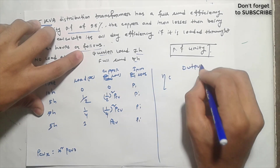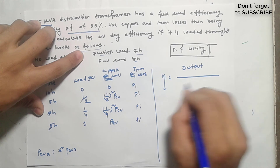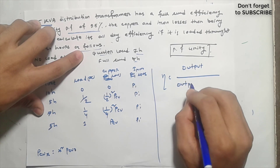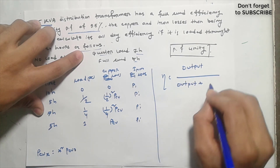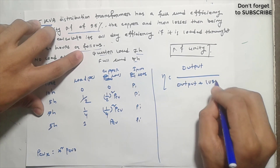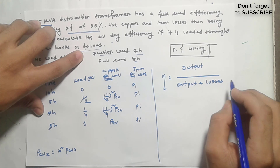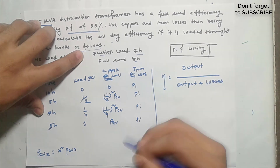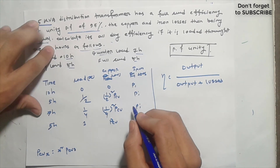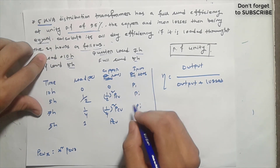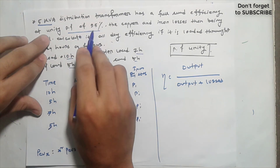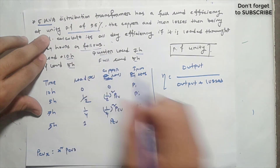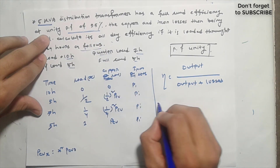The all-day efficiency formula is: output divided by output plus losses. The full load efficiency is 95%, so eta equals 0.95.